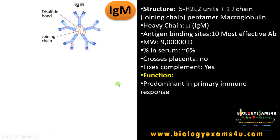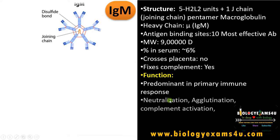IgM is involved in the neutralization of toxins released by bacteria and other pathogens. It also causes agglutination — the clumping of pathogens — facilitating their clearance from the system by phagocytes. As discussed, IgM also activates complement proteins.